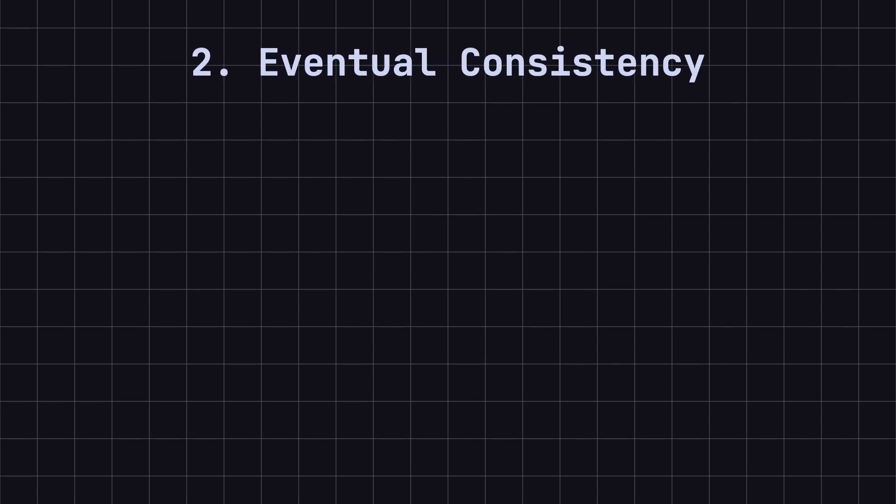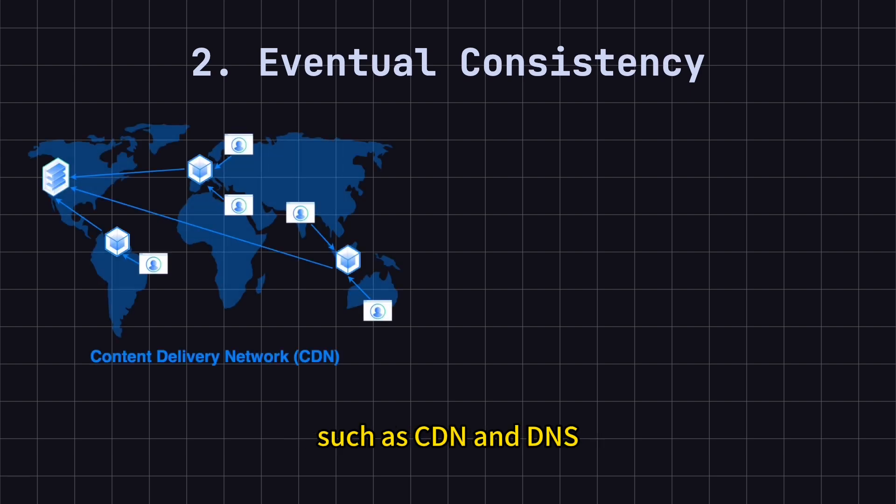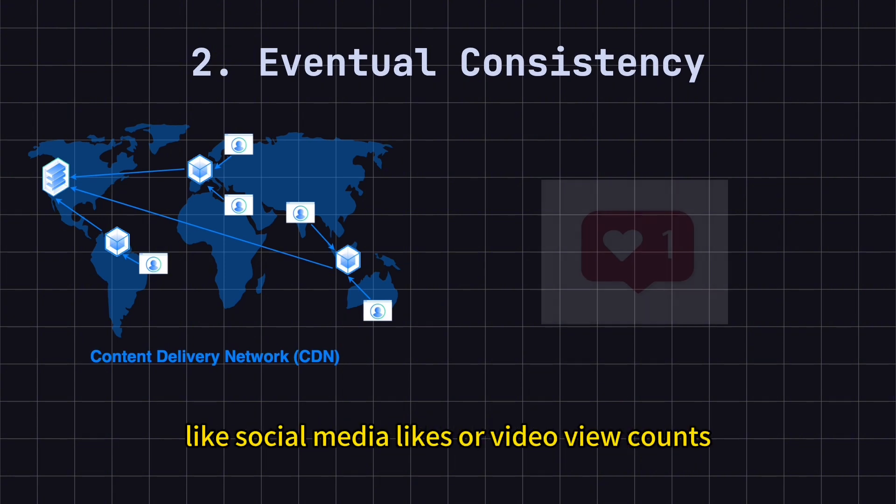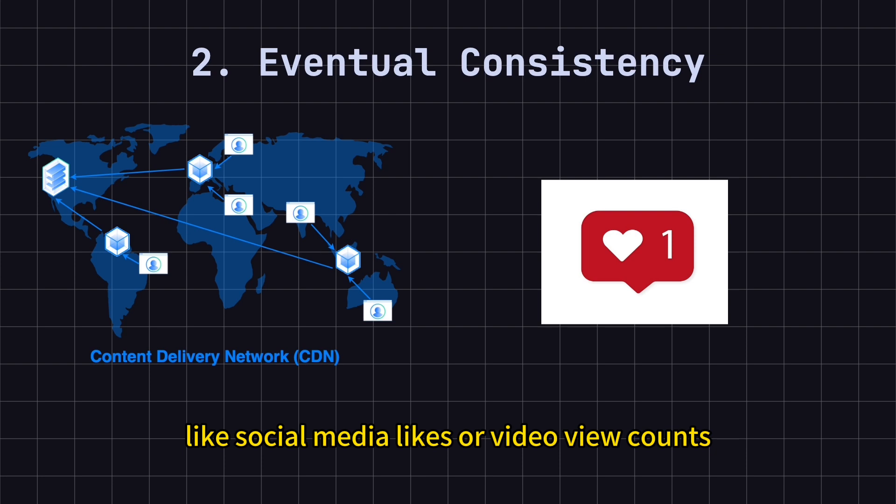Second, Eventual Consistency. Eventual consistency allows for temporary data inconsistencies, but over time, all nodes will converge to a consistent state. Many distributed systems, such as CDNs and DNS, use this model. It's also suitable for scenarios where strict consistency is less critical, but high availability is necessary, like social media likes or video view counts.